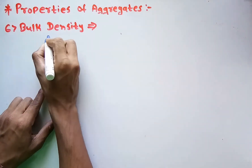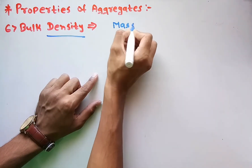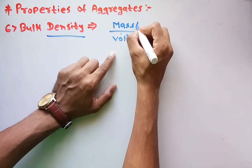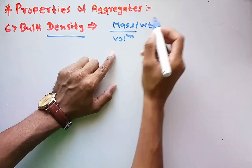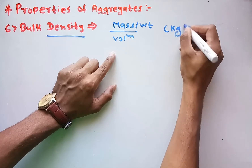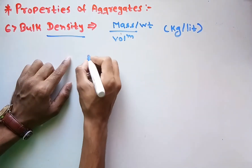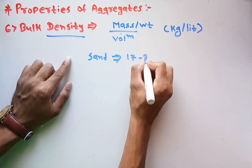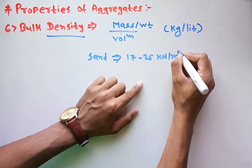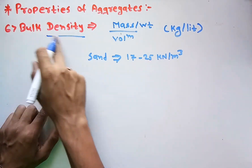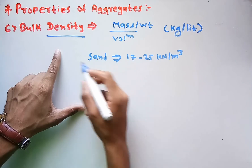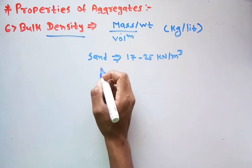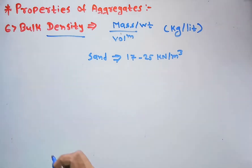The next property is bulk density. Density is simply mass per unit volume. In the case of aggregates, bulk density is defined as the weight or mass per unit volume of the particular aggregate, represented in kg per litre. For general soil or sand, bulk density varies from 17 to 25 kN/m³. Bulk density is an important parameter that shows the density of the concrete mix, directly impacting strength.